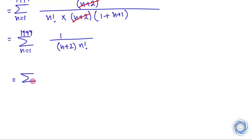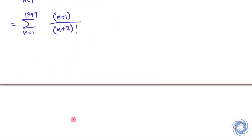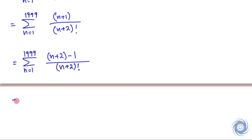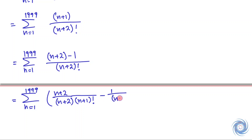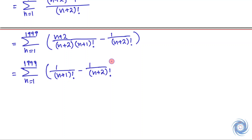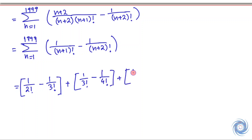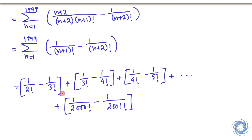From here we get the expression for the nth term. Now let us expand the series. From here we can see that only the first and last terms will survive — this is a telescoping series.